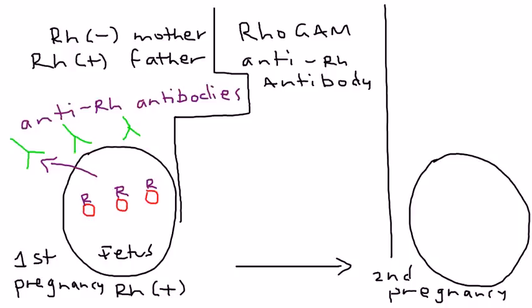You give the mother an IM shot at 28 weeks of the pregnancy.